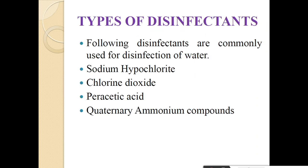Next point is the types of disinfectant. What do you mean by disinfectant? The chemicals or substances which are to be used for the disinfection are called disinfectant. The concentration and potential of the disinfectant affect the efficiency of the disinfection. There are various types of disinfectants used for the disinfection of water, like sodium hypochlorite, chlorine dioxide, paracetic acid, quaternary ammonium compound. These are some examples of disinfectants utilized for disinfection purpose.